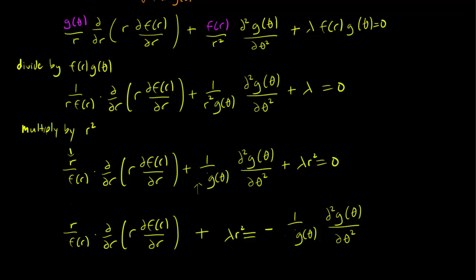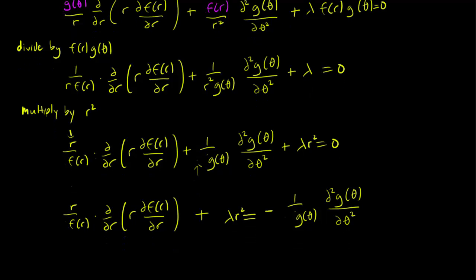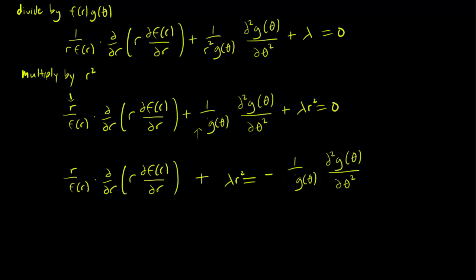We have an equation where one side is just a function of r and the other side is just a function of θ. Since they're equal, they must both be constant. This is a trick we've seen many times already, and we call that constant μ.